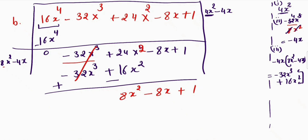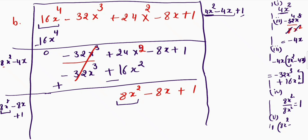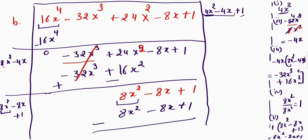We have to repeat the same step, so I will again double the whole divisor to get the first term of the new divisor. This is now my fourth step. I divide 8x² by 8x², giving me 1. So I write plus 1 in the quotient and in the divisor. Then I multiply 1 with the divisor 8x² minus 8x plus 1, getting 8x² minus 8x plus 1. After changing signs, all terms cancel and my remainder is 0.